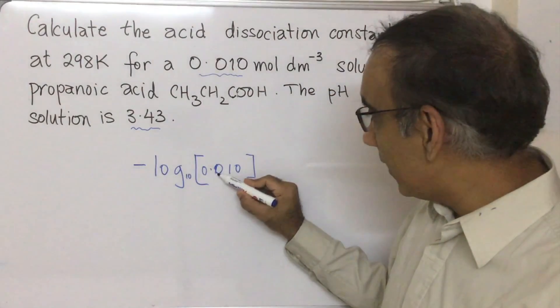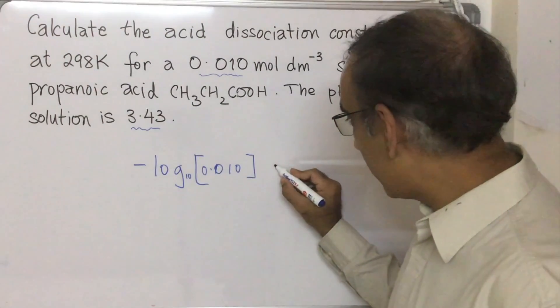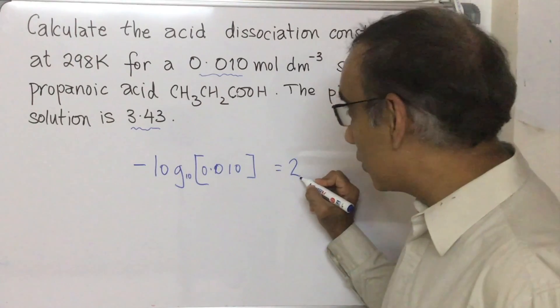If it's 0.1 it would come to an answer of one, and here it's 0.01 so it should come to an answer of two. That would be the pH.